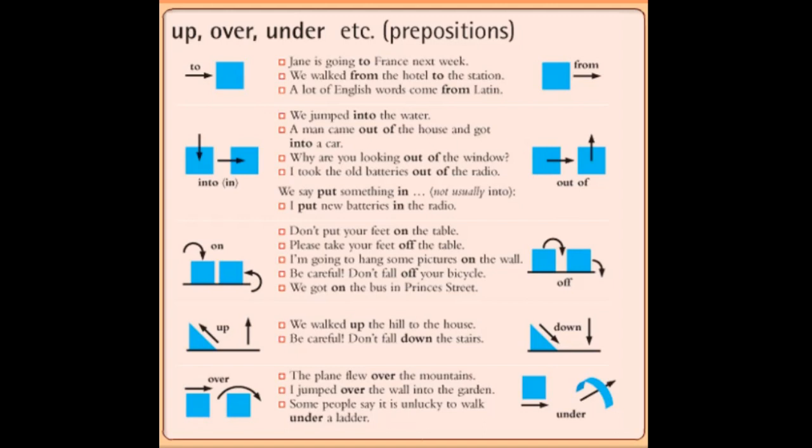So first of all, 'to' and 'from'. In the first sentence, Jane is going to France next week. So here we can see the picture showing 'to' shows the direction and also shows the country. We walked from the hotel to the station. A lot of English words come from Latin. So 'from' shows a source.